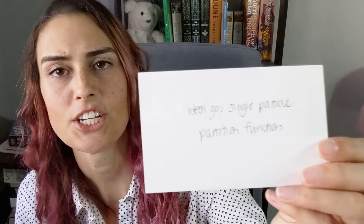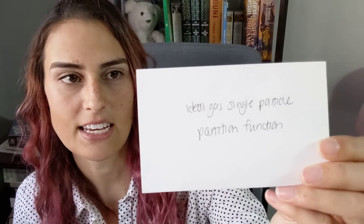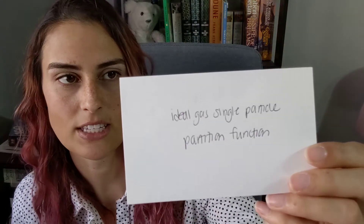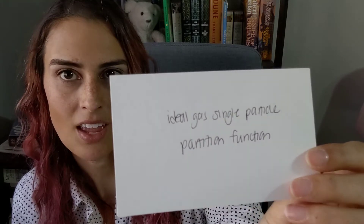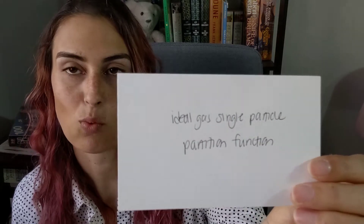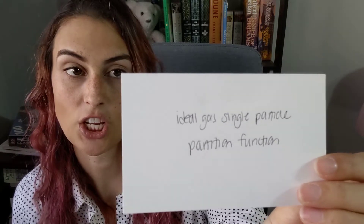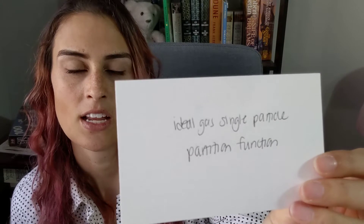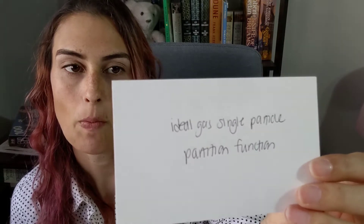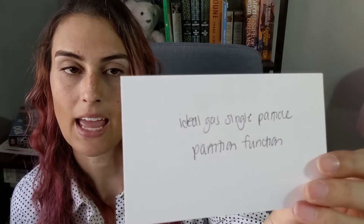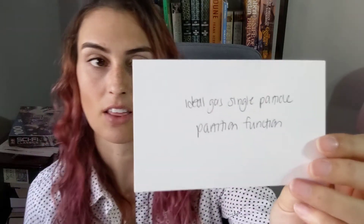Partition function of an ideal gas for a single particle: Z sub 1 equals V over h cubed times (2 pi m k_B T) to the 3/2.